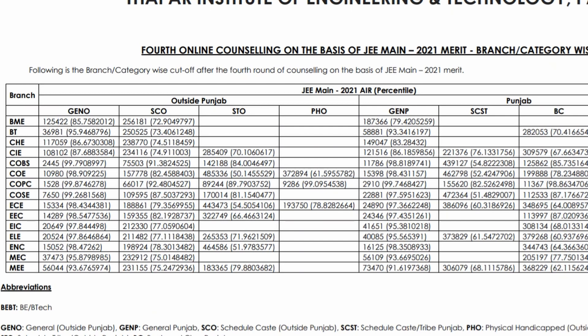COSC is Computer Science for the Derabassi campus. The cutoff is 7,000 rank for outside Punjab and 22,881 rank for Punjab. If you are confused whether to take Computer Science at Derabassi campus or Patiala campus, I have made a video for that — you can find it via the info button, in the description, or on the channel.